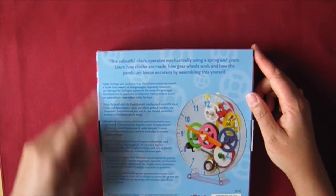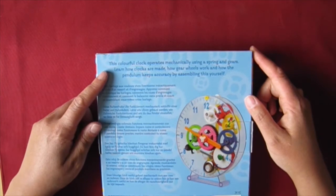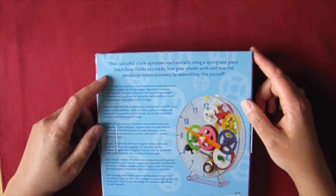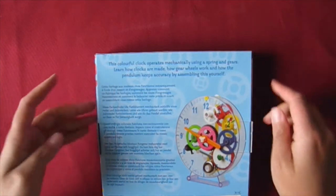So there's one, two, three, four, five, six, seven different languages. But basically, this colorful clock operates mechanically using a spring and gears. Learn how clocks are made, how gear wheels work, and how the pendulum keeps accuracy by assembling this yourself.